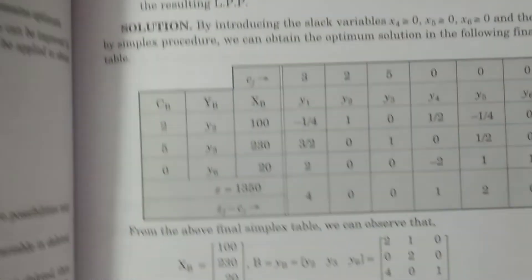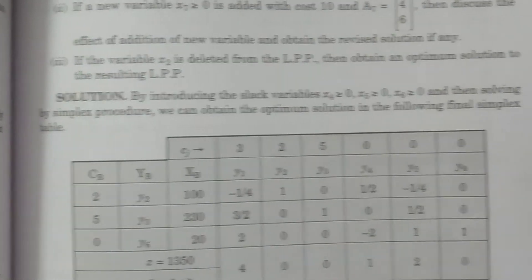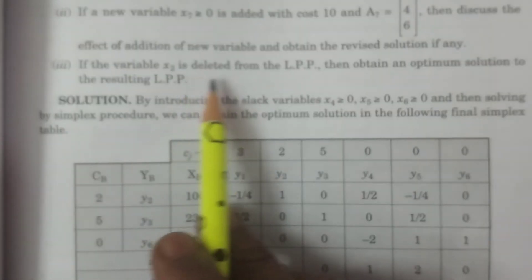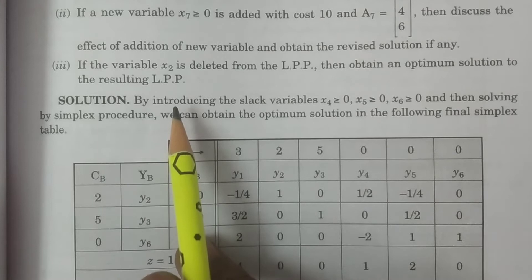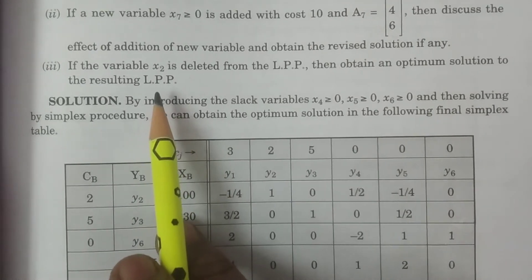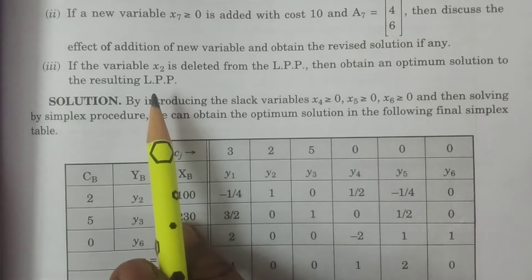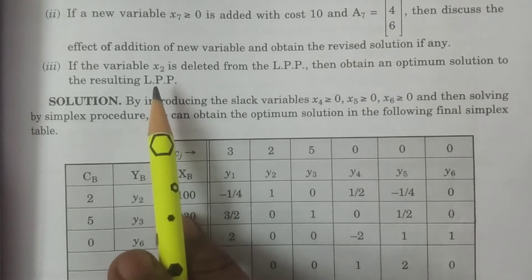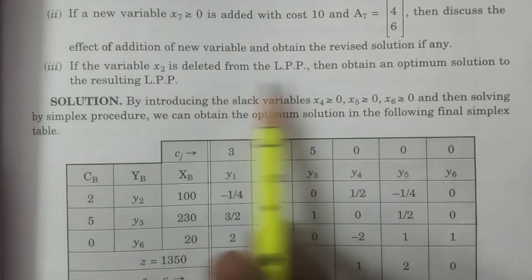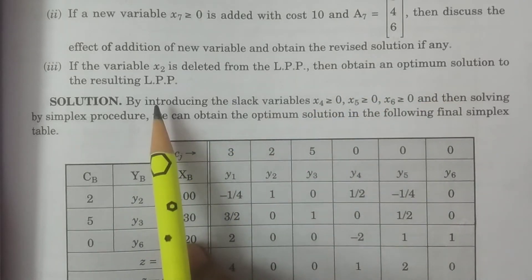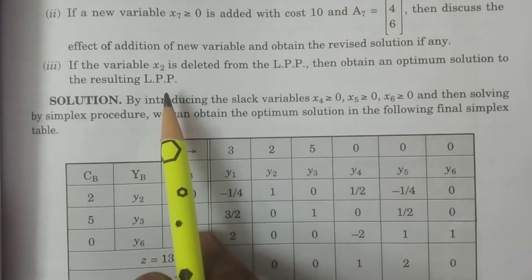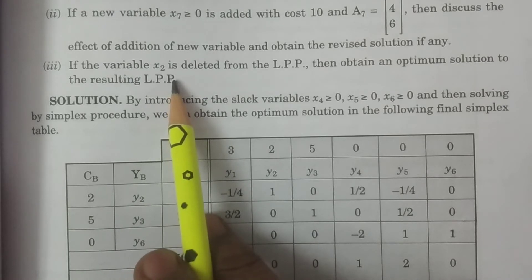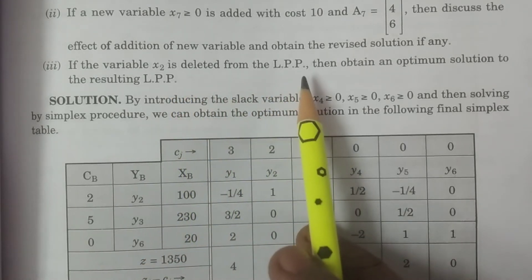This is the third case, third problem. The third question states: if the variable x2 is deleted from the linear programming problem, then obtain the optimum solution of the resulting LPP. x2 is an existing variable in the LPP which has three variables x1, x2, x3. We delete variable x2 and find the optimum solution — this is the post-optimal analysis question regarding deletion of variable x2.